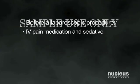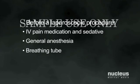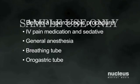Laparoscopic cholecystectomy is done under general anesthesia, which will put you to sleep for the duration of the operation. This will relax the muscles of the abdominal wall, allowing your surgeon room to work. A breathing tube will be temporarily inserted through your mouth and into your throat to help you breathe during the operation. You may also have an orogastric tube placed through your mouth and into your stomach to help drain fluids produced there. Most cases take between 30 and 60 minutes to perform.